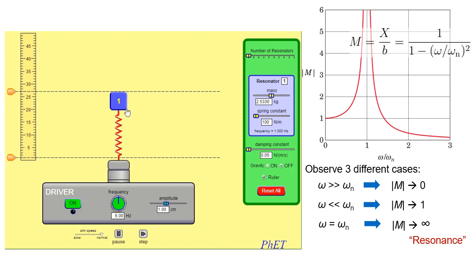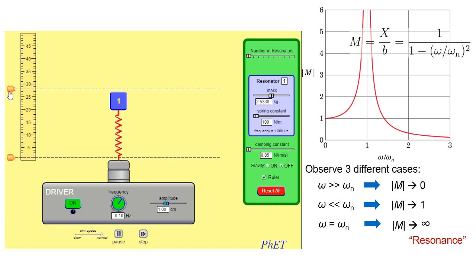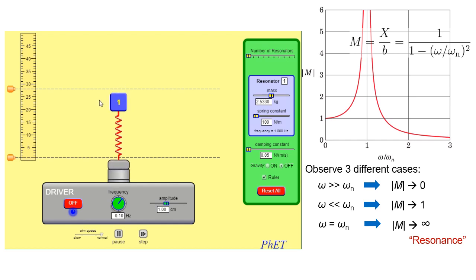We can confirm Case 1: even though the driver is oscillating with 1 cm amplitude, the mass stays stationary — the response is essentially zero. Moving on to Case 2, we set the driving frequency to 0.1 Hz — ten times smaller than the natural frequency. According to theory, M approaches one, so the mass should oscillate with about 1 cm amplitude. And we can confirm this as well.